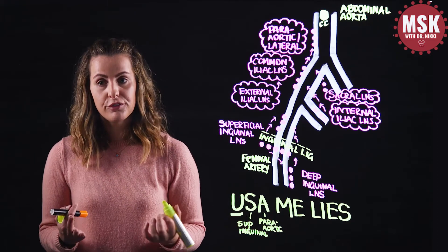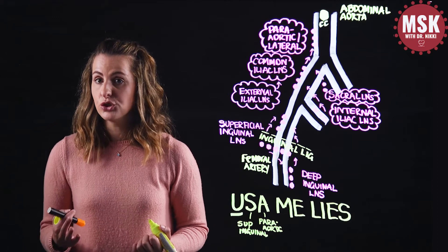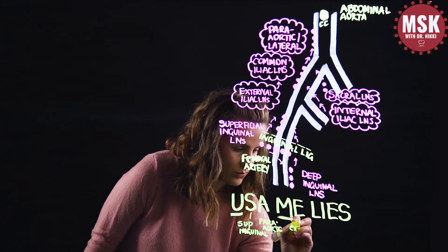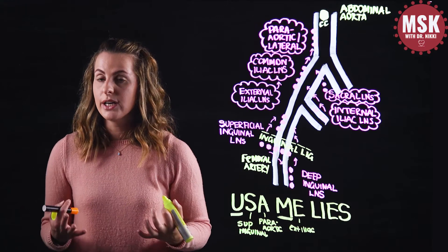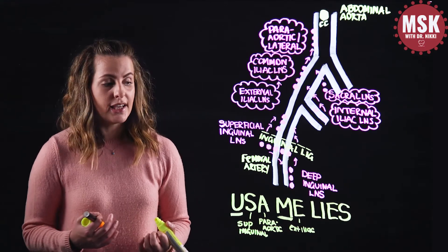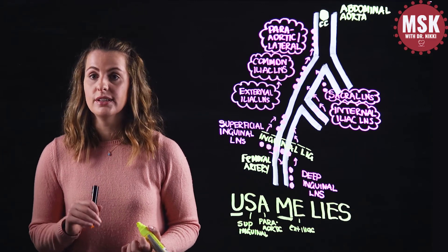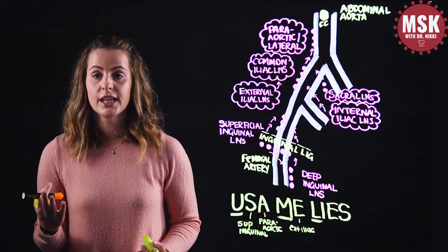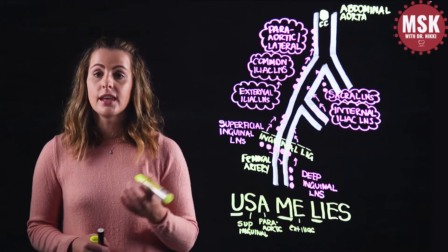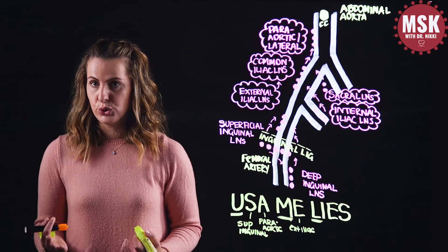The middle or body of the uterus is drained by the external iliac nodes. The lower uterus including the cervix is drained by three potential lymph node groups: lymph can drain to the internal iliac nodes, the external iliac nodes, or the sacral nodes.